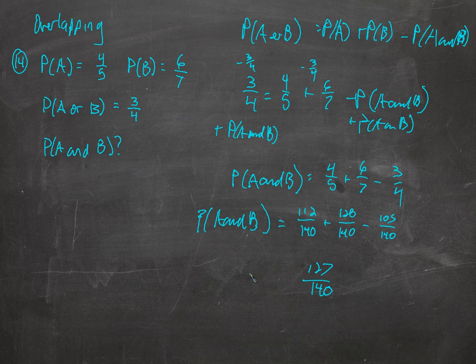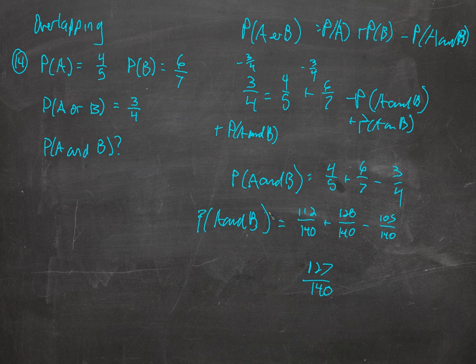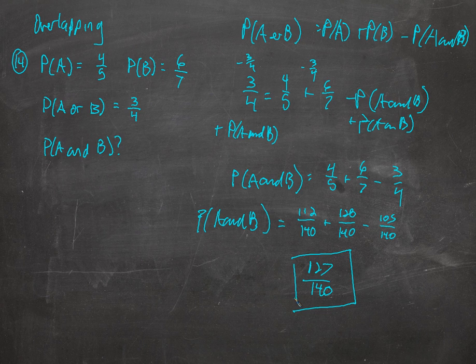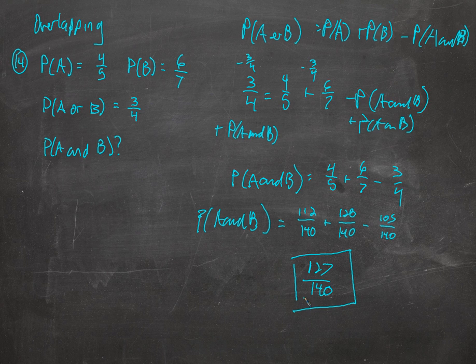So that is the probability that you could do whatever is happening here and wind up getting A and B at the same time. This is like drawing a king that's also a spade — it'd be the overlap. So the overlap of A and B is 127 out of 140 — that's the probability that the event will be those two things at the same time: it will be A and it will be B, it will be a king and a spade, it will be a ball and it will be red — a red ball.